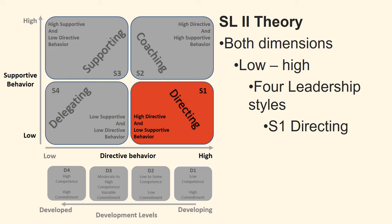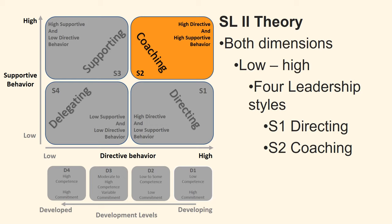Style one, directing, consists of high directive behavior and low supportive behavior. The leader provides specific direction about goals, shows and tells how, and closely tracks the individual's performance in order to provide frequent feedback on results. Style two, coaching, consists of high directive behavior and high supportive behavior. The leader explains why, solicits suggestions, encourages, and continues to direct goal or task accomplishment.